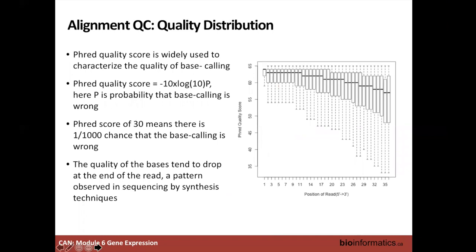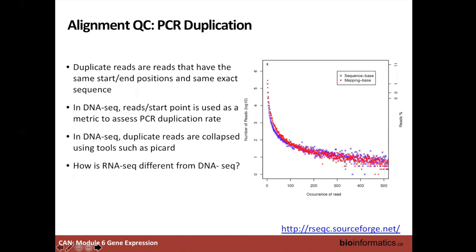Another thing to check is the quality of base calling, assessed using the Phred quality score, which is -10 × log10 of the probability that the base call is wrong. A Phred score of 30 means there is a 1 in 1,000 chance the base is called incorrectly. You want Phred scores above 30. A good quality plot shows scores consistently high — even above 50 — all along the read from 5-prime to 3-prime end.